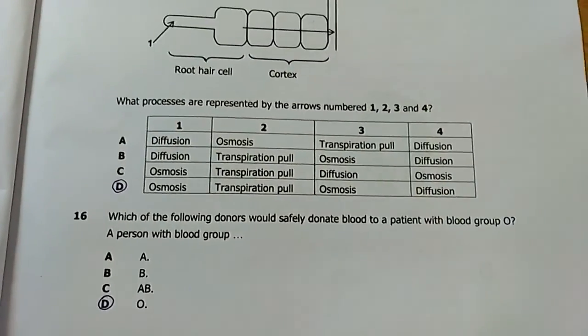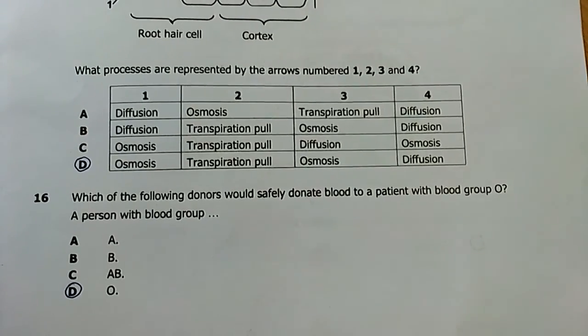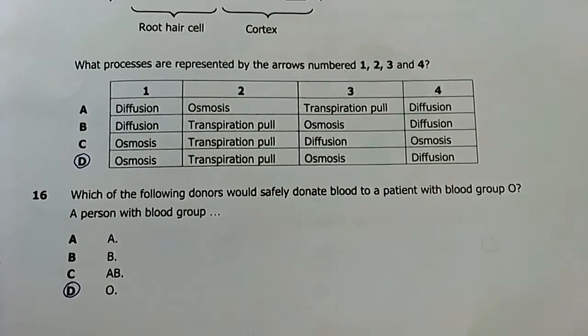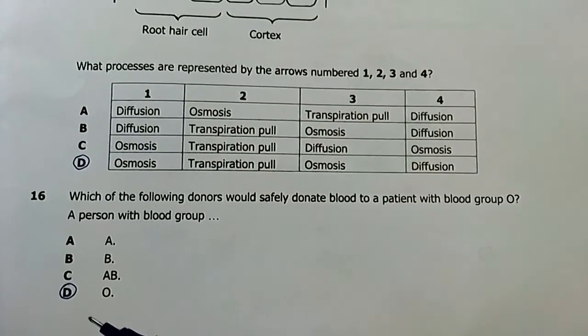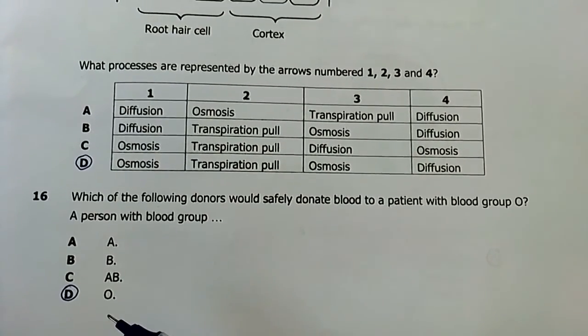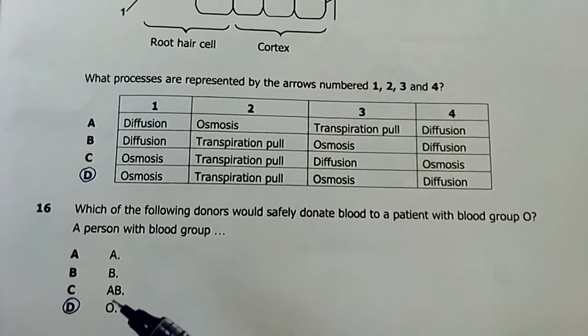Question sixteen: which of the following donors would safely donate blood to a patient with blood group O? A fellow blood group O individual. Blood group O only receives from O, but it's a universal donor, not a universal recipient. Our answer is O, which is D.